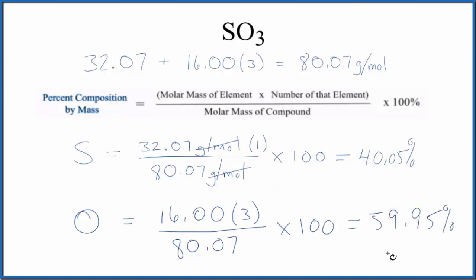So these numbers should add up to 100% or very close. In this case, they do add up to exactly 100%. And that's how you find the percent composition by mass for each element in SO3, sulfur trioxide.